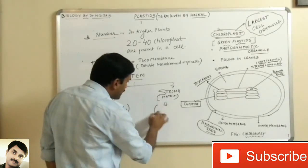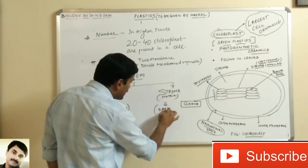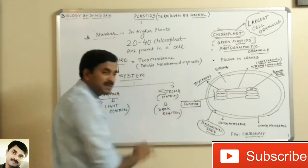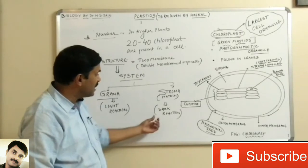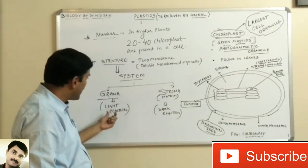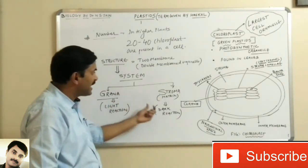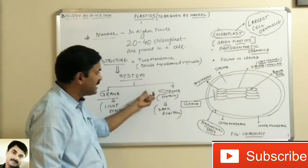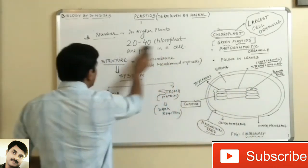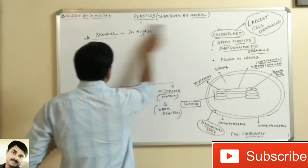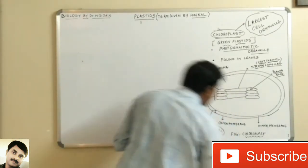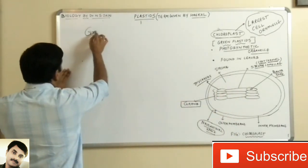In the grana, light reactions occur, and in the stroma, dark reactions occur. There are two important reactions occurring in photosynthesis: light reaction and dark reaction. Light reactions occur in grana and dark reactions occur in the stroma.